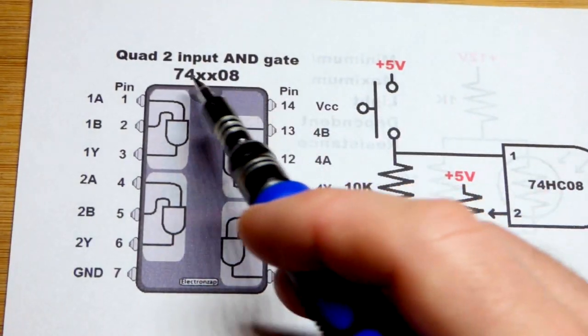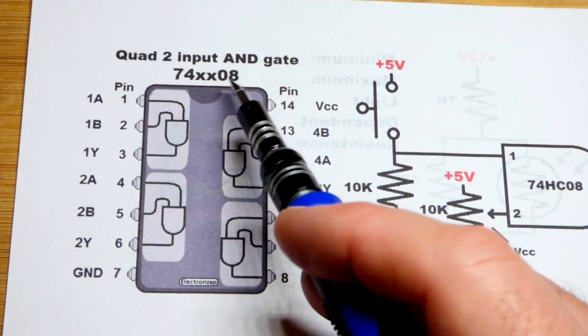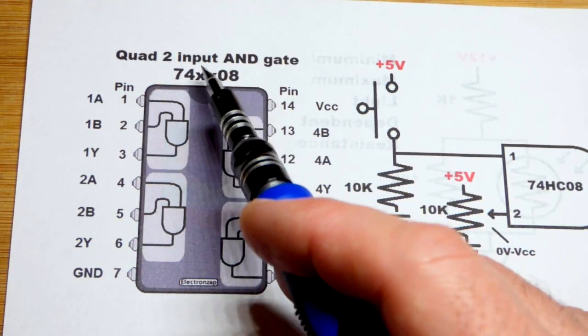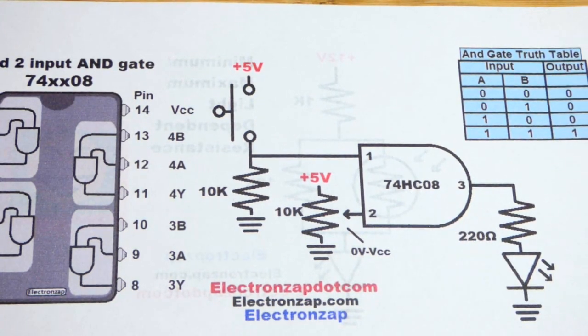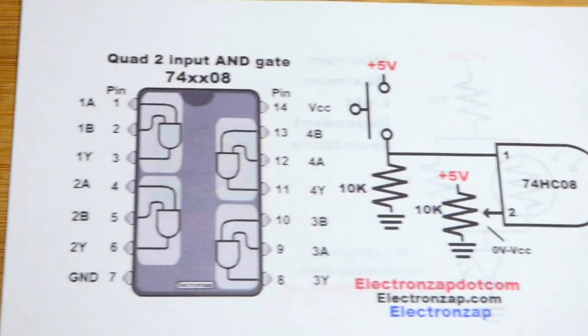It's the 7400 series 08, so 7408 integrated circuit. They come in different versions. We're going to use the high speed CMOS version which is probably the most common.